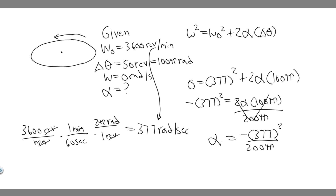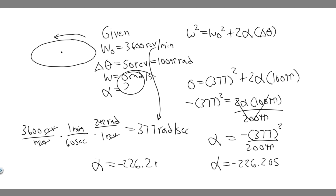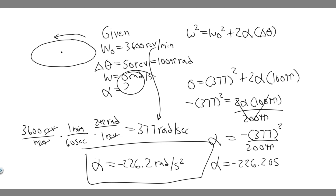Dividing both sides by 200 pi, we get alpha equals minus 377 squared divided by 200 pi. The result is alpha equals negative 226.2 radians per second squared. It's negative because we're decelerating — the centrifuge is slowing down from speed to zero. So the constant angular acceleration alpha is approximately negative 226.2 radians per second squared.